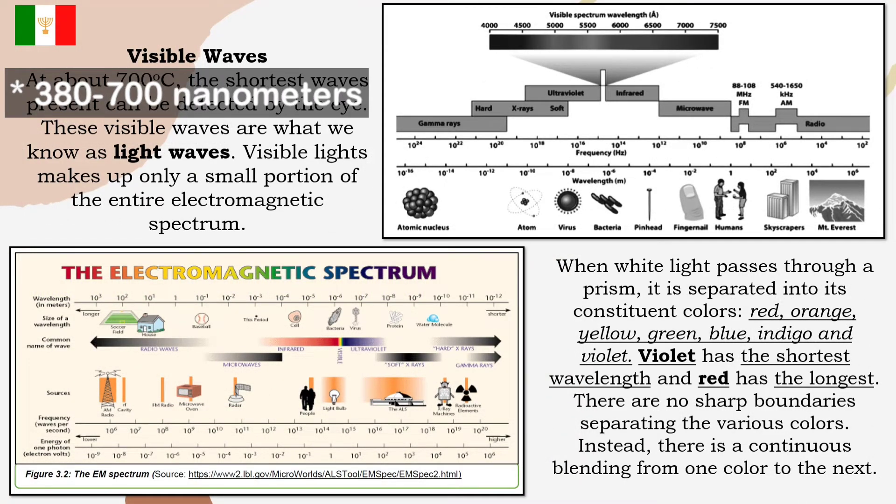Next is visible waves. Typically, the human eye can detect wavelengths from 380 to 700 nanometers. These visible waves are what we know as light waves. Visible lights makes up only a small portion of the entire electromagnetic spectrum. When white light passes through a prism, it is separated into its constituent colors. We have the red, orange, yellow, green, blue, indigo, and violet. Violet has the shortest wavelength, and the red has the longest. There are no sharp boundaries separating the various colors. Instead, there is a continuous blending from one color to the next.